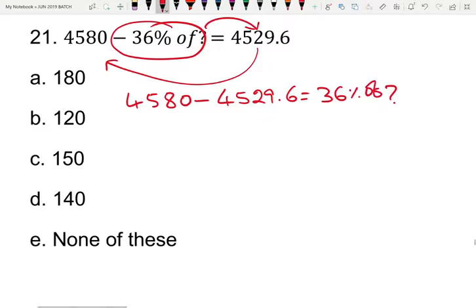Now calculating: 4580 minus 4530 is 50, so we get 50.4 equals 36% of the unknown number.